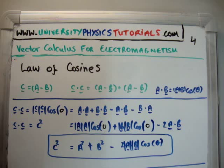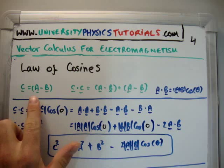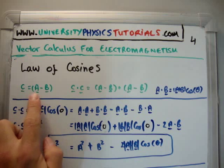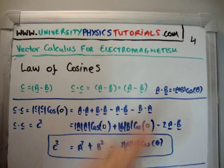Let's define the vector C as the difference of two vectors A and B. If I want to take the dot product of C with C, what I'm going to get is the dot product of A minus B with A minus B.